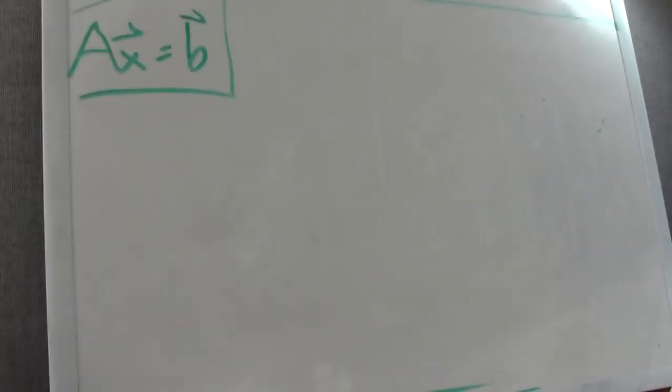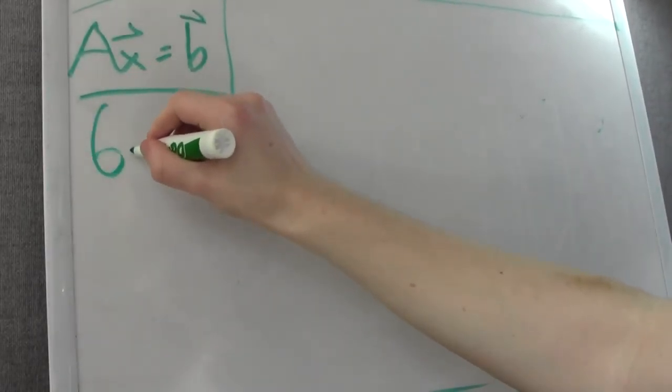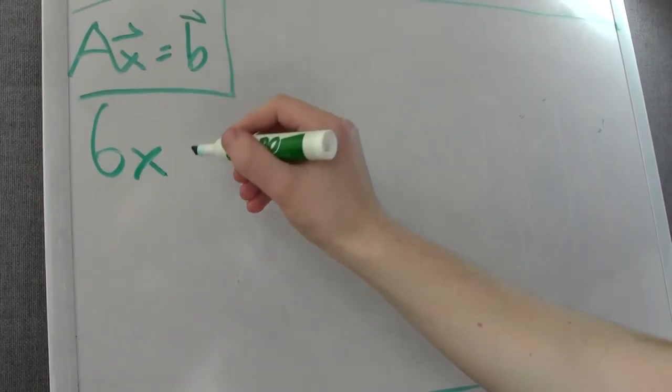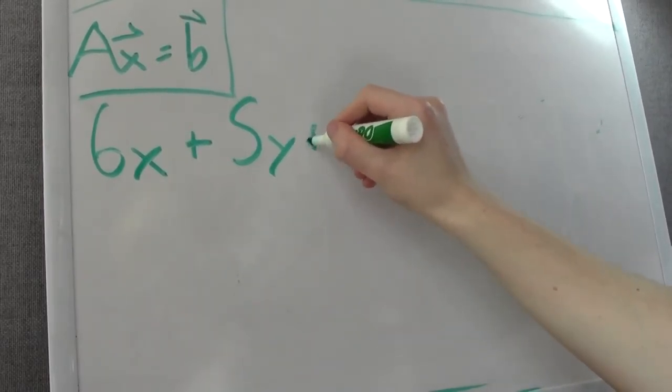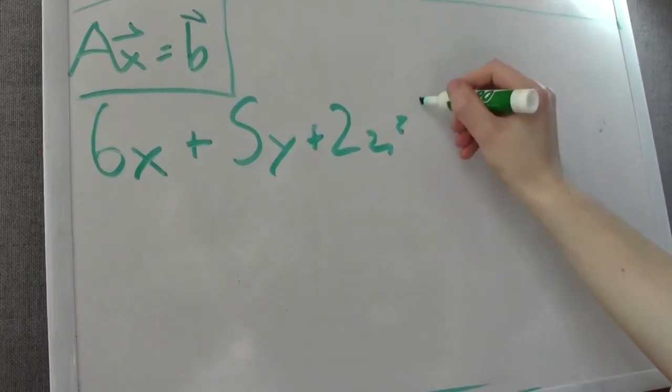We only had two there, so let's try one with three. Something like 6x plus 5y plus 2z equals 12, 8x plus 3y plus 7z equals 29.